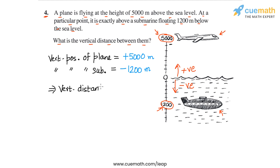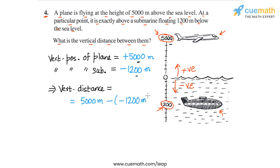The vertical distance between the plane and the submarine will simply be equal to the difference between the two positions — the difference between +5000 meters and −1200 meters. This will be equal to 5000 meters minus (−1200 meters), so there is a double negative sign — make sure you don't miss it.